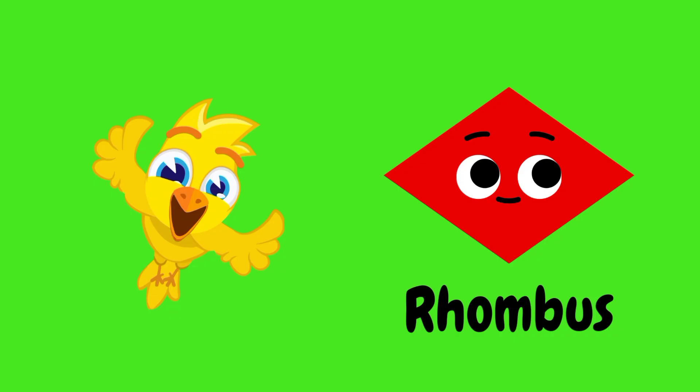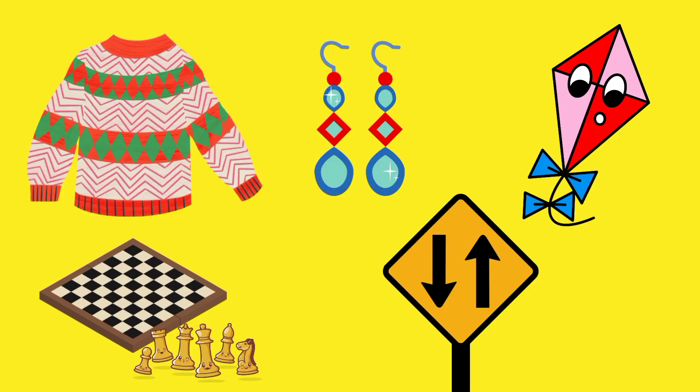A rhombus has four equal sides. The opposite angles and sides are equal. There are so many things in rhombus shape. How many things do you know?